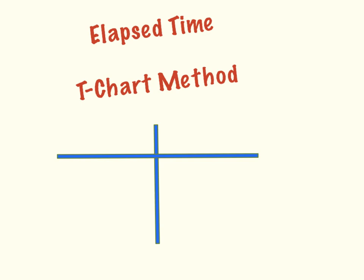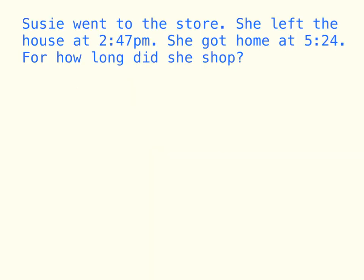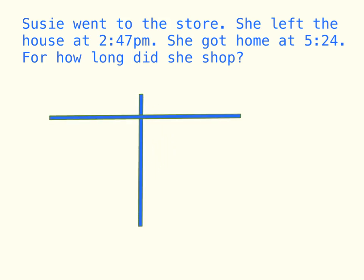As you can see, you draw a t-chart. Let's take a look at our first problem. Susie went to the store. She left the house at 2:47 PM and she got home at 5:24 PM. For how long did she shop? The first thing we do is draw our t-chart — we draw a line down and a line across. That's how we begin the t-chart method.